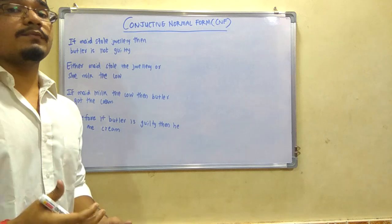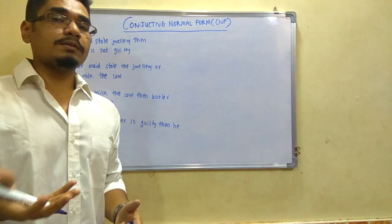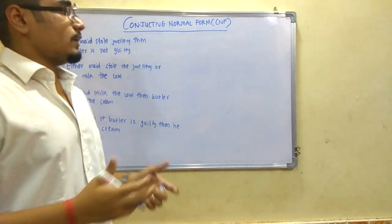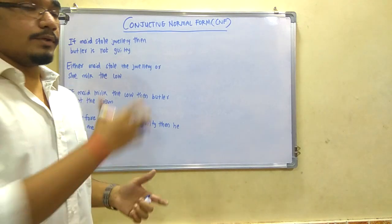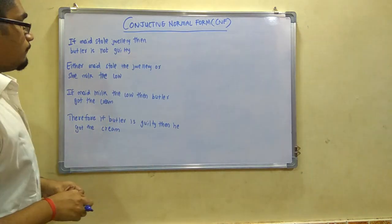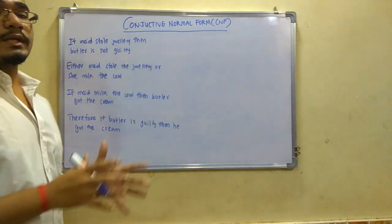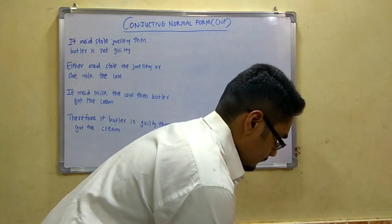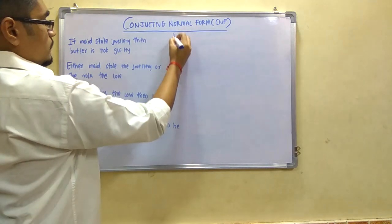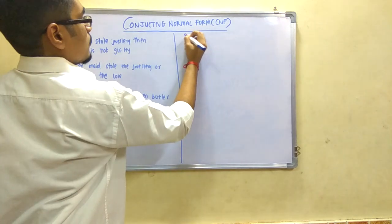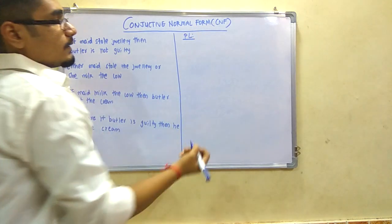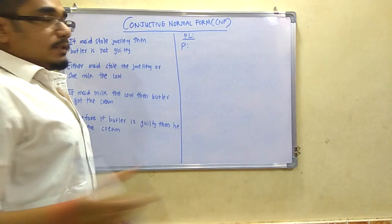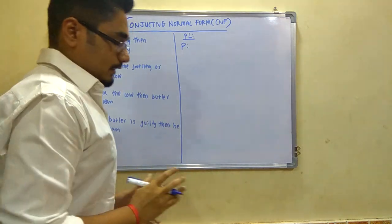Based on these four statements, we will first convert them into propositional logic. From propositional logic we will eliminate the symbols and convert into CNF, and finally from CNF we will resolve it. So let us see how to approach this problem — first we create the propositional logic statements.